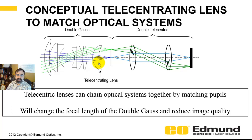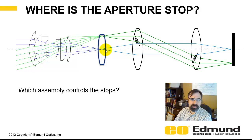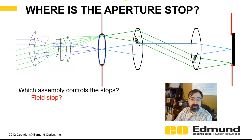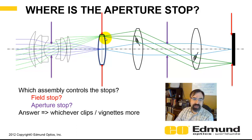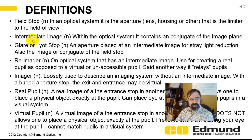In this combined system, which assembly controls the stops? For the field stop, you could have the detector or the field lens. For the aperture stop, you could have an iris in the double telecentric or within the double Gauss. The answer is whichever clips or vignettes more. You could use your detector as the field stop, put an iris to control stray light, or undersize this lens to be a glare stop or Leo stop. Definitions to know: field stop, intermediate image, Leo stop, re-imager, imager, real pupil, virtual pupil.